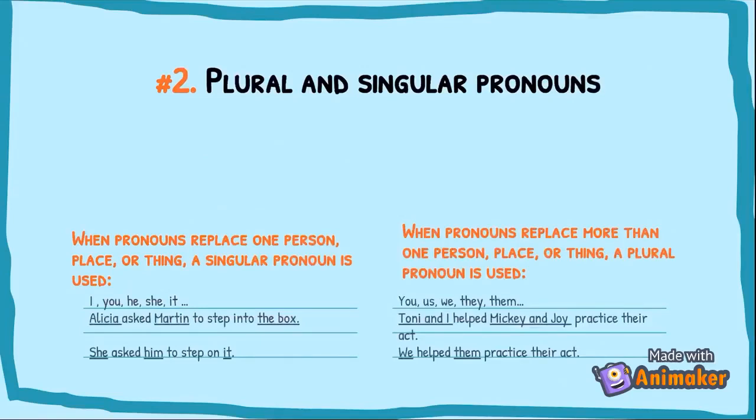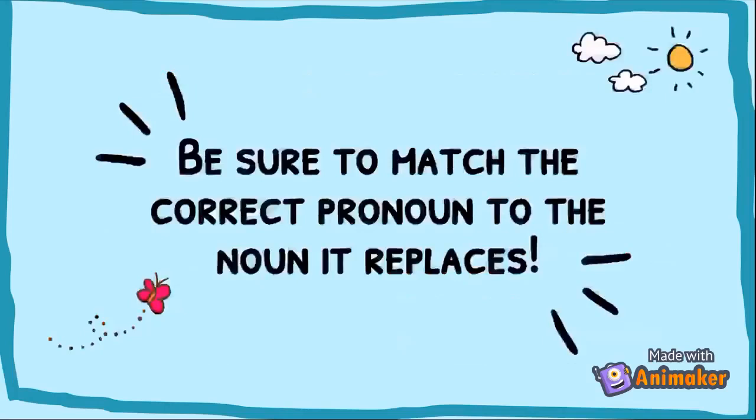When pronouns replace more than one person, place, or thing, a plural pronoun is used, like you, us, we, they, and them. For example: Tony and I help Mickey and Joy practice their act. Tony and I are more than one person, and Mickey and Joy are more than one person, so it will be: we help them practice their act. Be sure to match the correct pronoun to the noun it replaces.